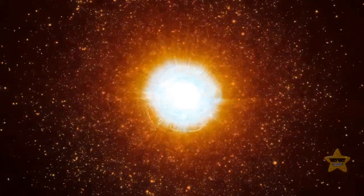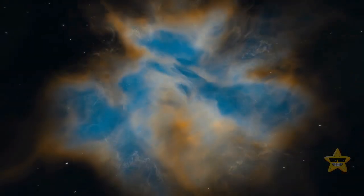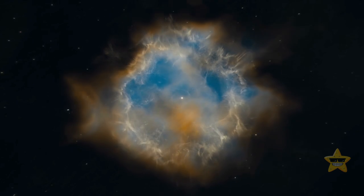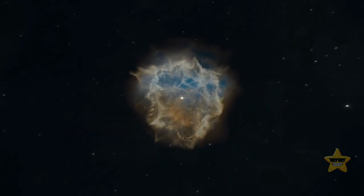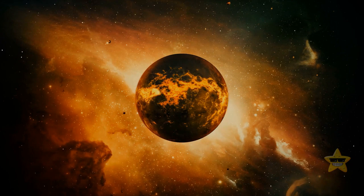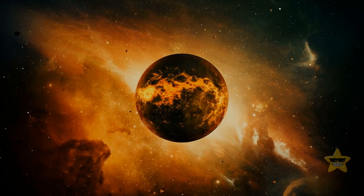In the outer parts of the disk, the material started to clump together too. These clumps crashed into each other and got bigger and bigger. Some of them became round because of their gravity. Those turned into planets, dwarf planets, and big moons.